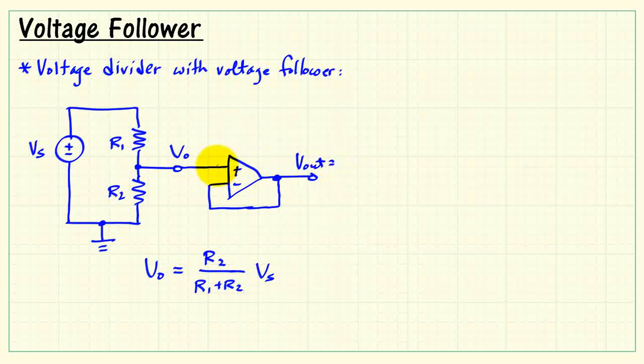The voltage follower is, essentially, a voltage amplifier with a gain of 1. Therefore, its output is a replica of its input.